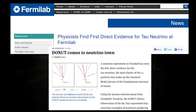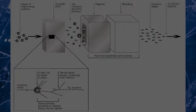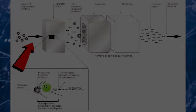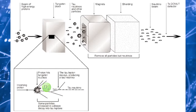The Tau neutrino was detected at the DONUT experiment at Fermilab in 2000. An intense beam of protons from the Fermilab Tevatron was smashed into a large block of tungsten, producing particles known as charmed mesons, including the D-sub-S meson — a particular favourite of mine as it was the focus of a large amount of my PhD research. D-sub-S mesons rapidly decay to form a Tau anti-neutrino and a Tau lepton. The Tau lepton then rapidly decays, producing a Tau neutrino amongst other products.